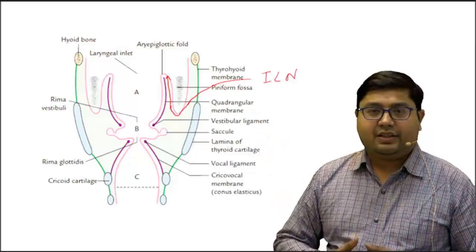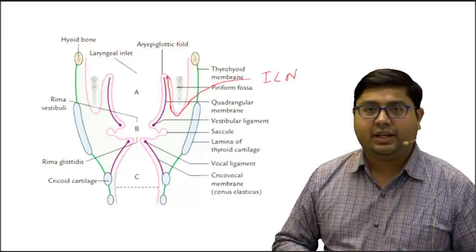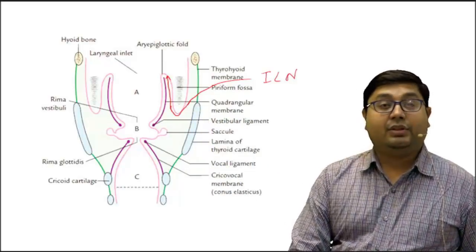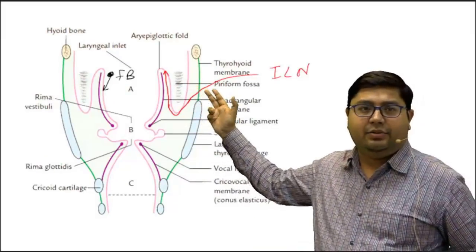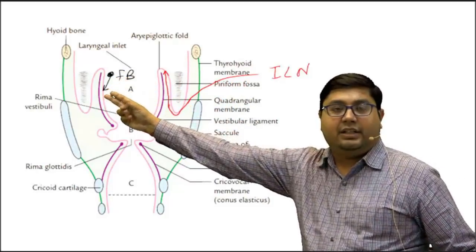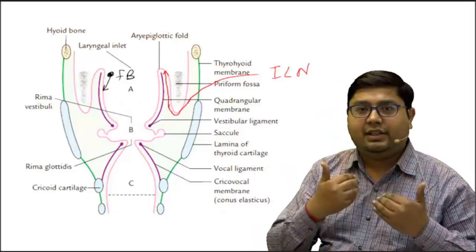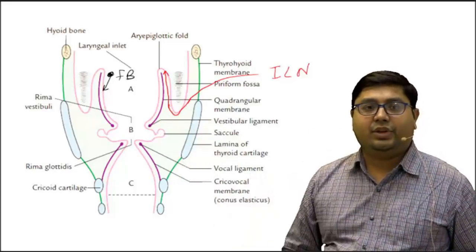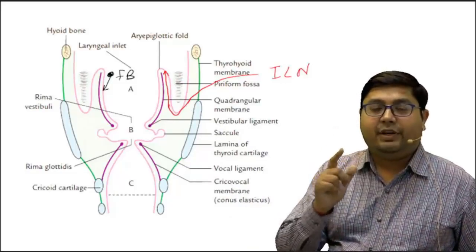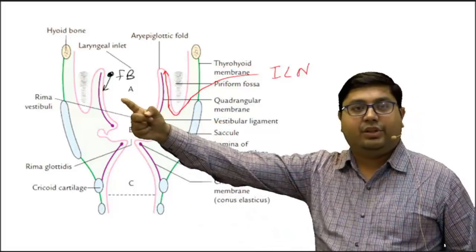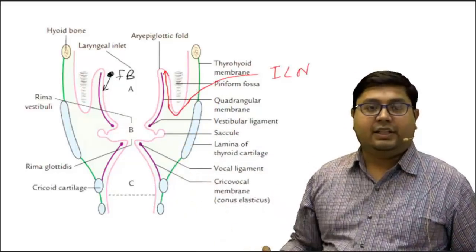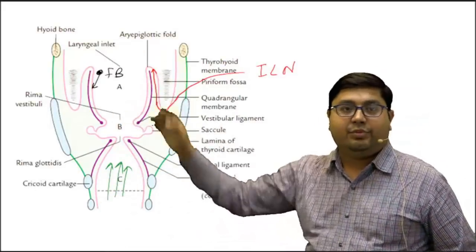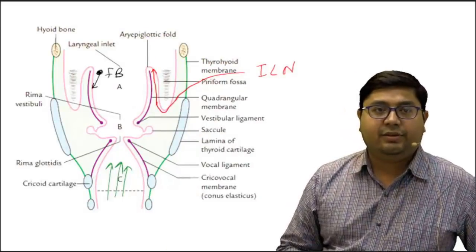The external laryngeal nerve is a motor branch supplying only the cricothyroid muscle. Now regarding normal physiology: if a foreign body tries to enter the laryngeal inlet, it hits the mucosa. This activates the internal laryngeal nerve, which is the afferent limb of the protective cough reflex. The reflex is triggered, generating high-pressure airflow that expels the foreign body. This is the normal protective cough reflex at work.